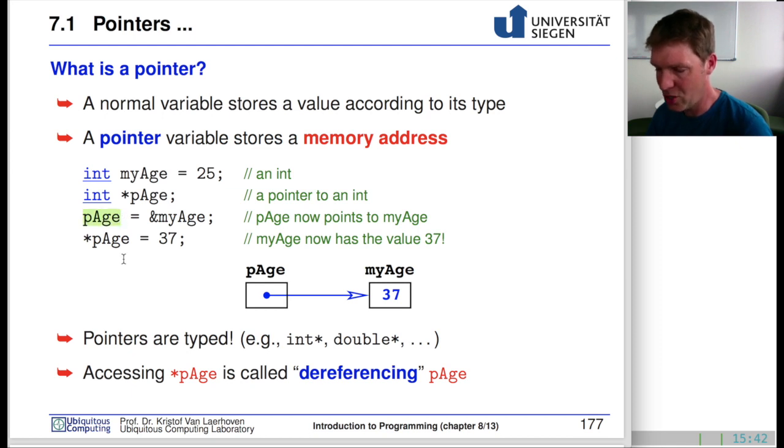With a pointer, we can change the value. Where we normally have pAge, the pointer towards the age, we have this variable pointing to the memory location of myAge. If we dereference this, we can actually address the value that this memory location is holding. This is quite powerful.